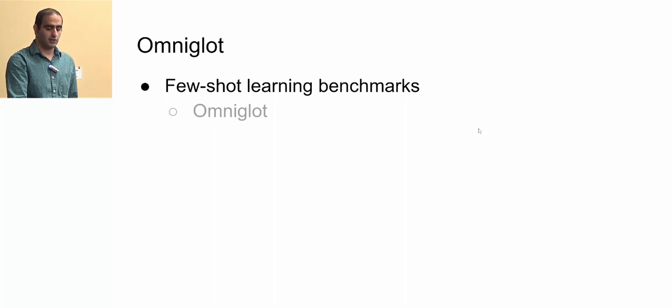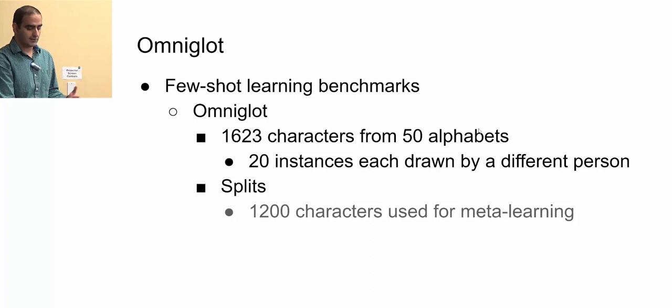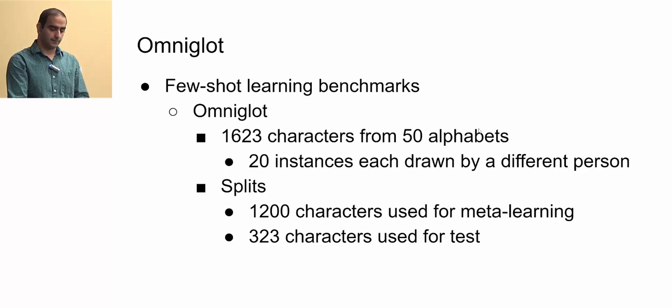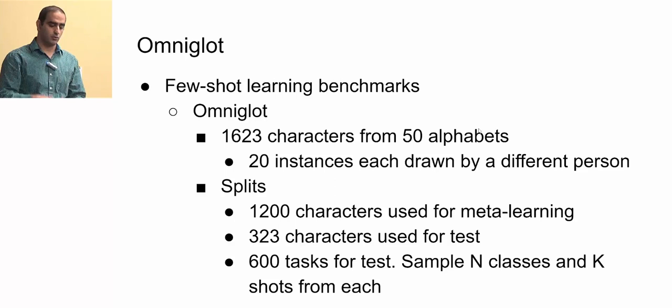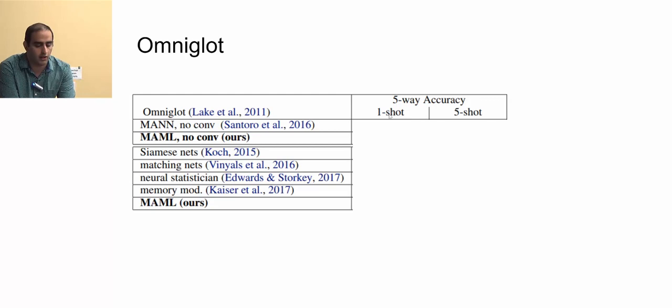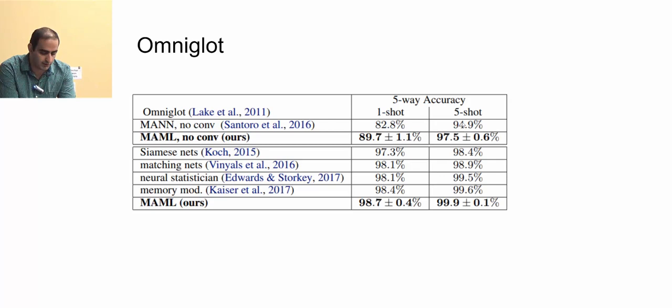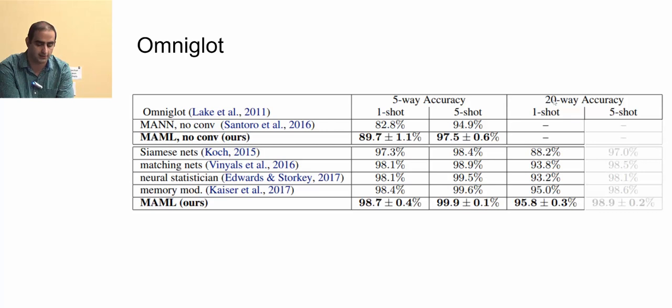This approach works well, as shown in the MAML paper evaluated on Omniglot — a few-shot learning benchmark with 1,623 characters from 50 different alphabets, each character having 20 instances drawn by different people. It is split into 1,200 characters for meta-learning and 323 for testing, with 600 target tasks generated for evaluation. MAML achieves very good results on five-way and 20-way tasks in both one-shot and five-shot settings.